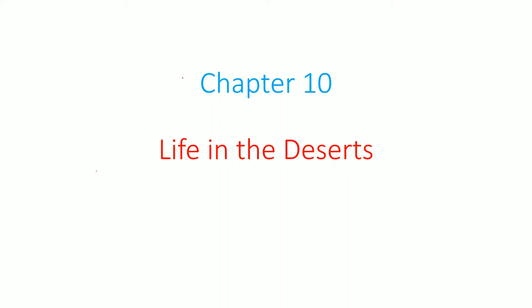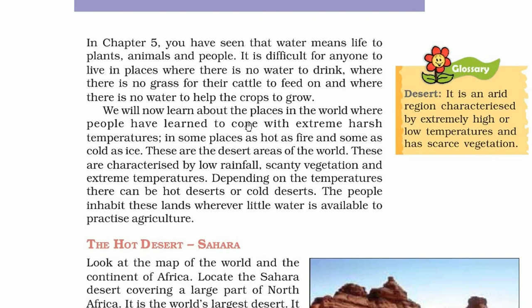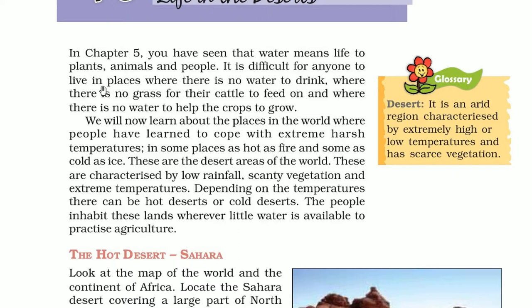This is chapter number 10, which is Life in the Deserts. We are talking about life in the deserts. What we have seen in the earlier discussion is that water means life to plants, animals and people. So without water, it is very difficult to survive, where there is no grass for their cattle to feed on or where there is no water to help the crops to grow. So a desert is an arid region characterized by extremely high or low temperatures and has scarce vegetation.